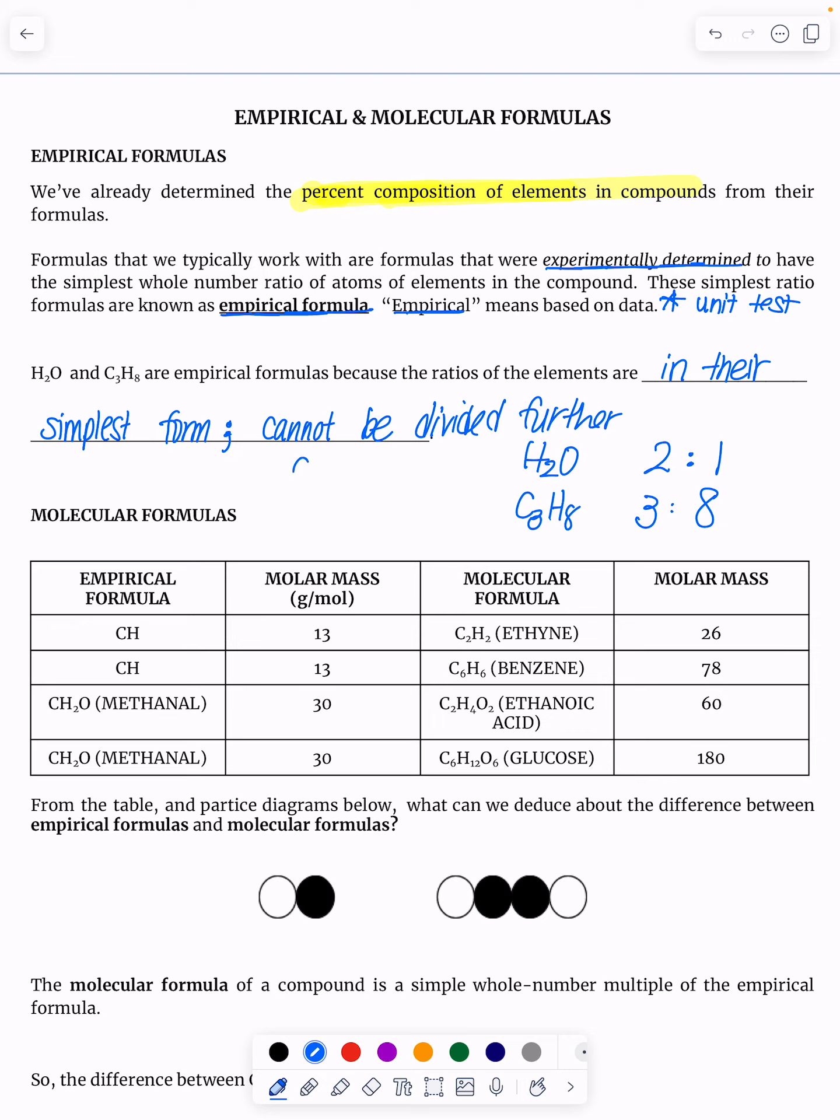If somehow I had C4H10, 4 and 10 can be divided. This is not empirical, as an example. Both of them, I would have to divide them by two. I would actually get a two to five empirical ratio.